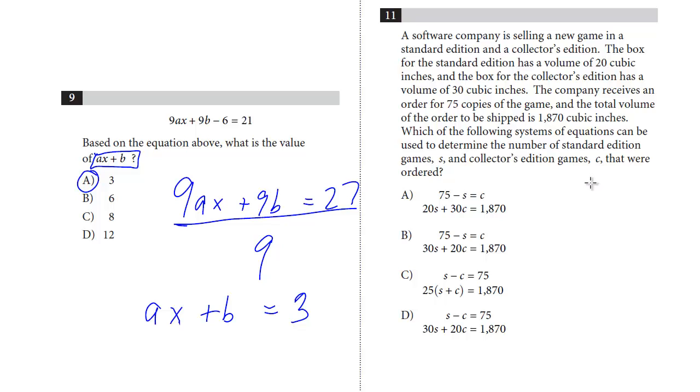So the first one I would probably do the easier one is what I call the single variable. It's the total number of copies of orders that were sent. And we've got just two orders. We've got S for standard, C for collectors. And we're told that the total number of copies shipped was 75. So we know that S plus C equals 75.